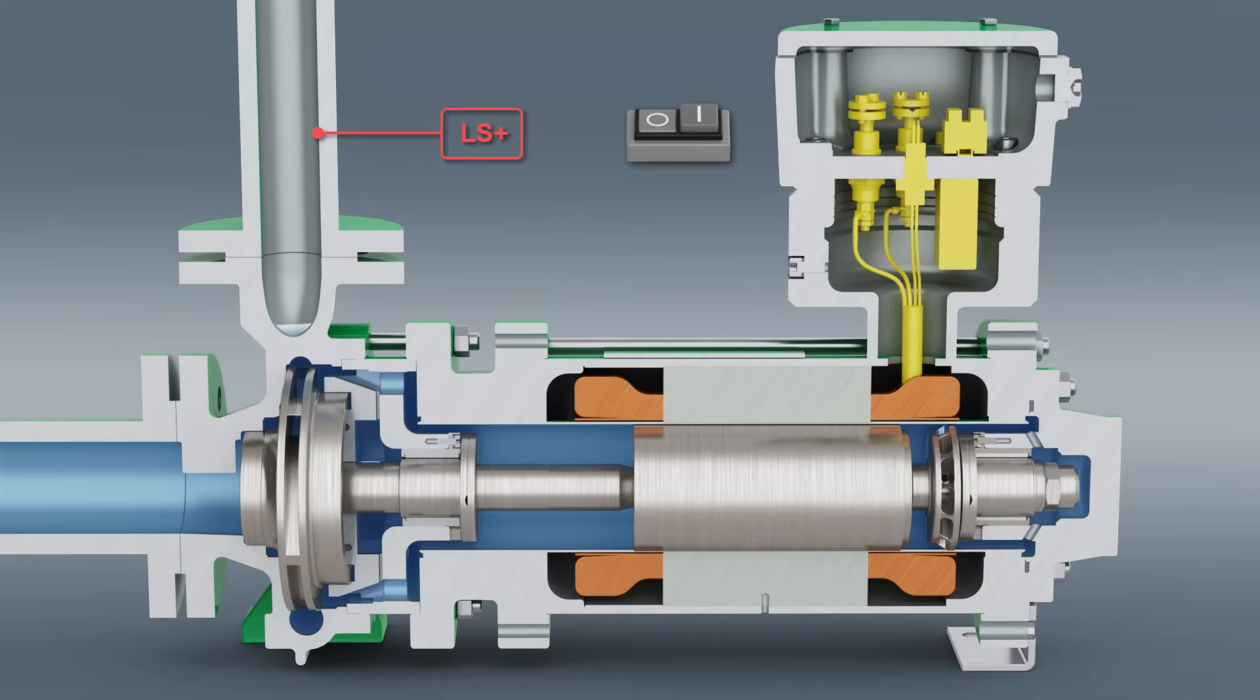During or shortly after filling, potential air pockets at the rear of the motor compartment and in the area of the impeller and bearings are vented out of the pressure nozzle. The hermetic canned motor pump is self-venting.